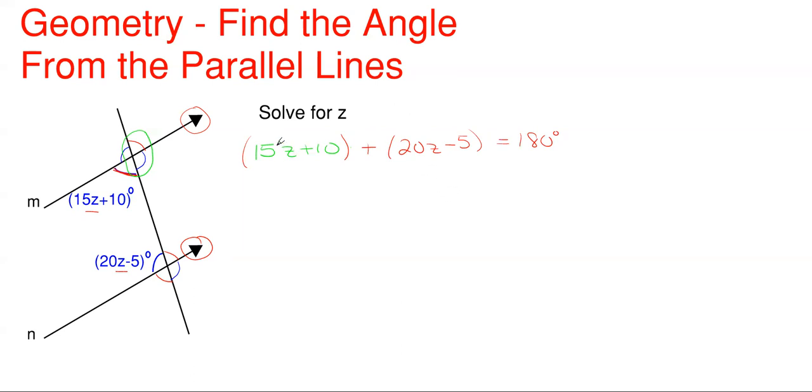What we can do here is combine like terms and eventually solve for z, which is what the problem is asking for. We're going to have 15 and 20. We have to use a little algebra here. So 15 and 20 gives me 35z. And then I have 10 minus 5 here, which gives me plus 5 is equal to 180 degrees.